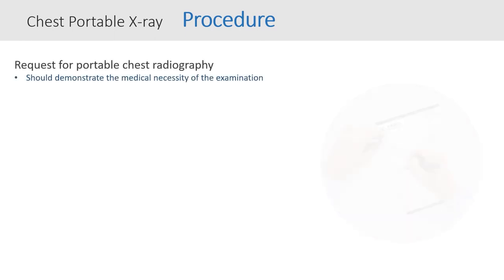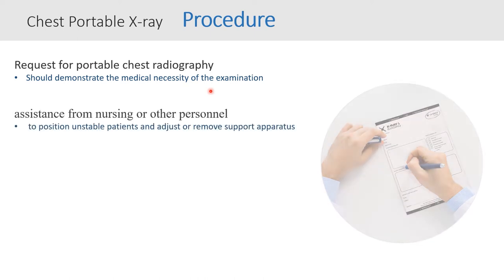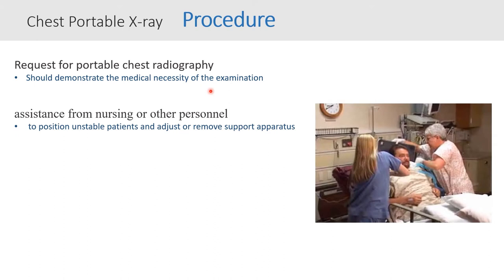Regarding the procedure: first and foremost, there should be a request for the portable x-ray, either verbally or written. It should indicate a summary of the patient and the necessity of the examination — in other words, why they are asking you to do it portable instead of a normal PA x-ray. Always ask the staff nurse or other personnel to assist you when performing the portable x-ray.